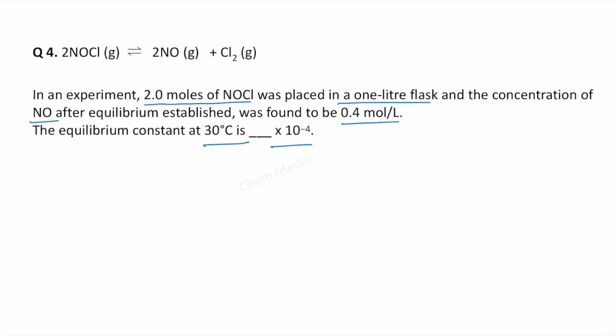We have to find out the answer in terms of 10 to the power minus 4. The equation already appears to be self-balanced. When we have 2 moles of NOCl, we would get 2 moles of NO and 1 mole of Cl2.